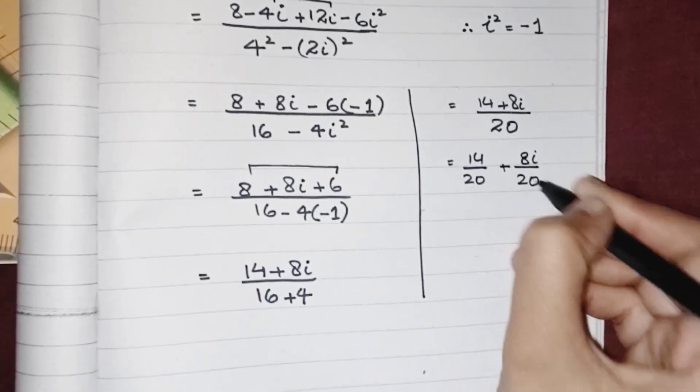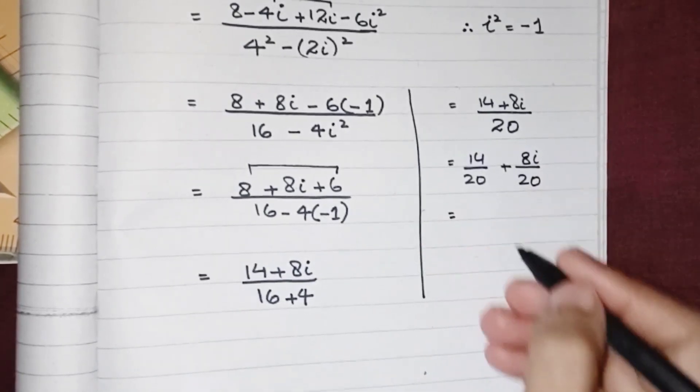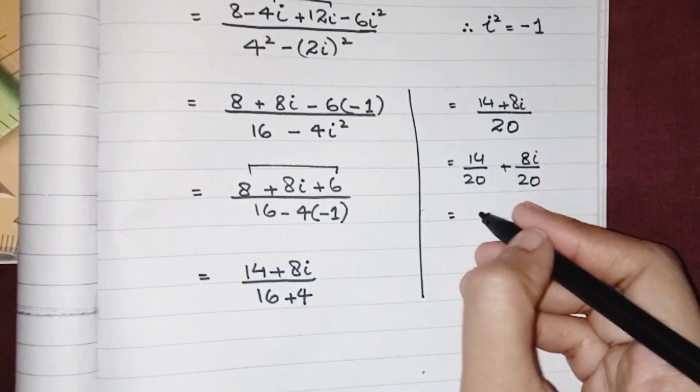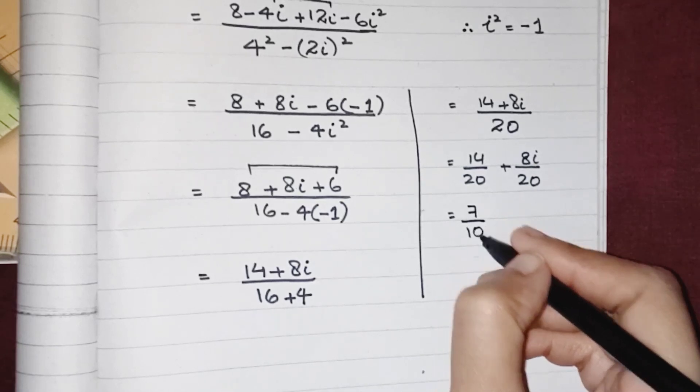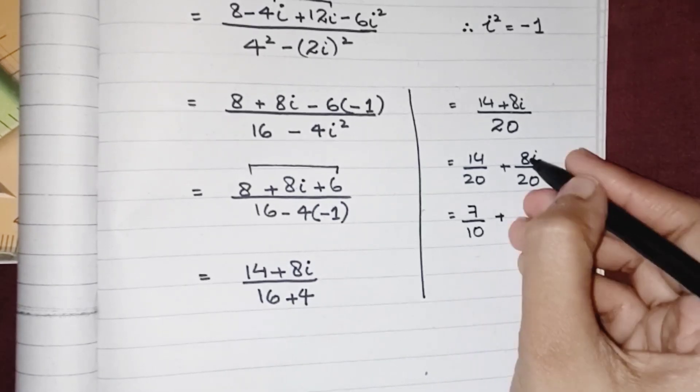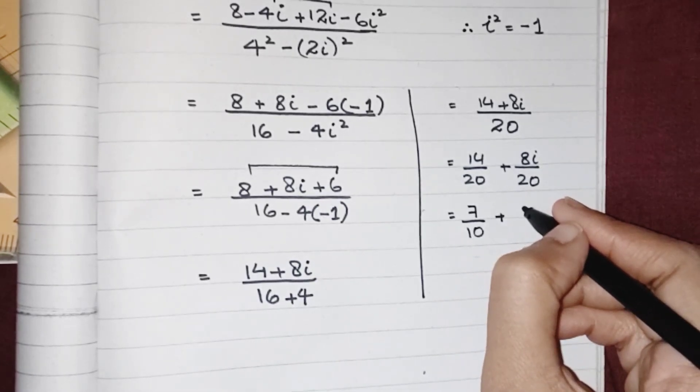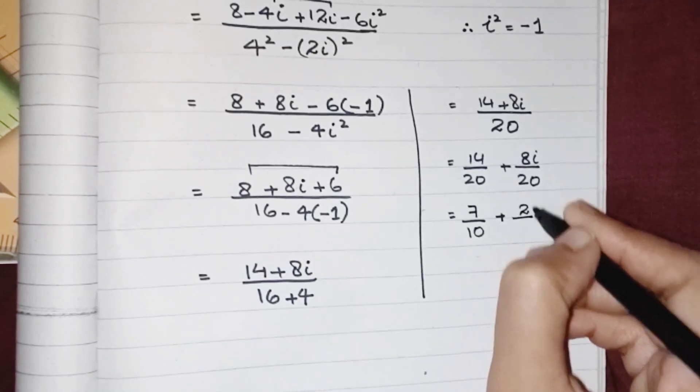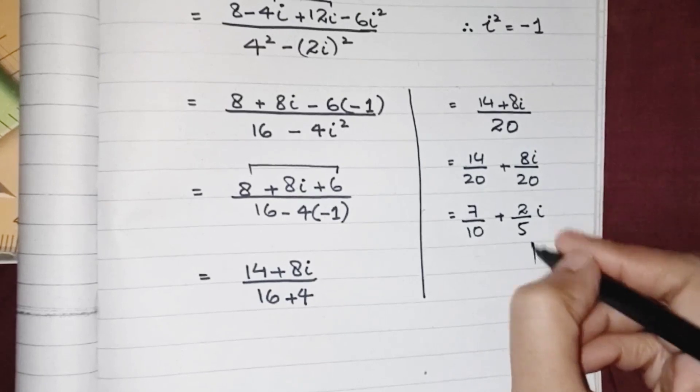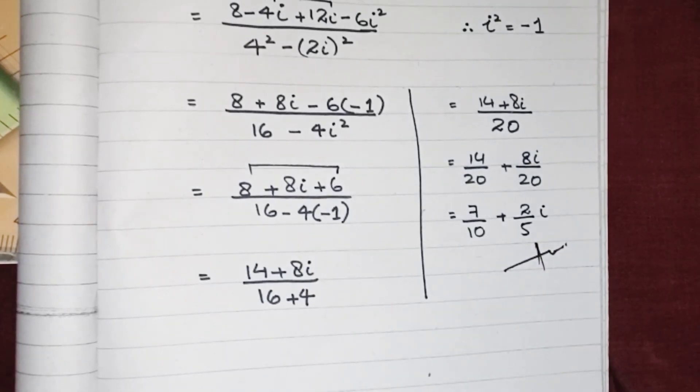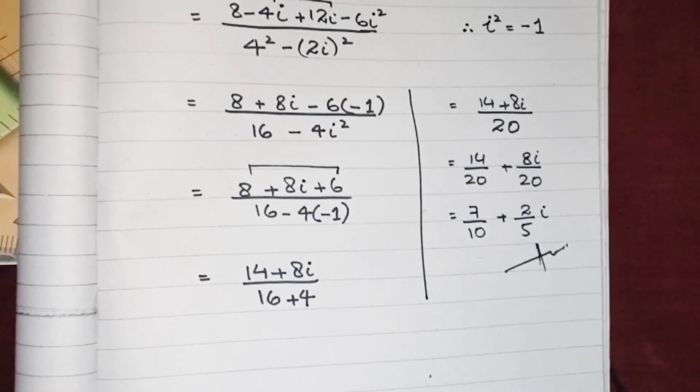If both will be reducible, we can reduce them. 14 and 20 both come in the table of 2, so we can write it like 7 upon 10. And 8 and 20 are multiples of 4, so we can write it like 2 upon 5. And this one is the solution. Hope you enjoyed it and learned something new. Take care, bye bye. Do subscribe.